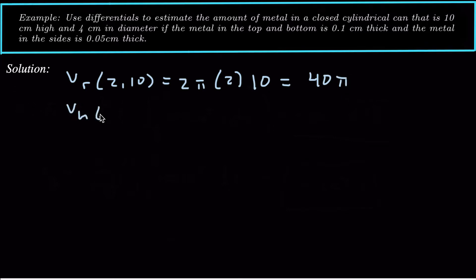So that's our V sub r evaluated at that point. And V sub h evaluated at that point, 2 comma 10, is going to be pi times 2 squared, which is 4 pi. Now we take these numbers and plug them in.